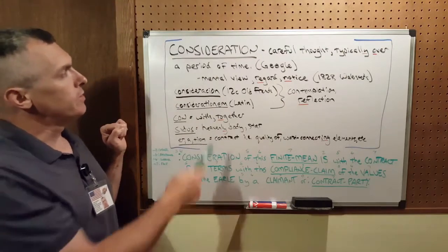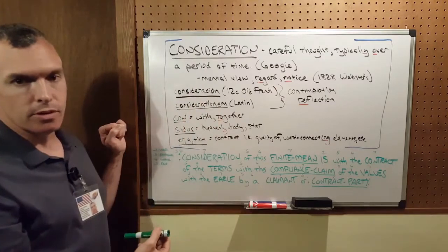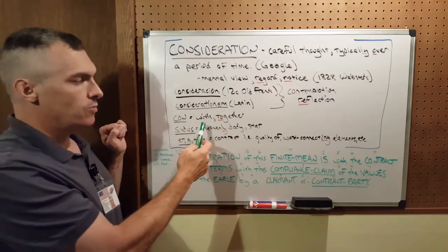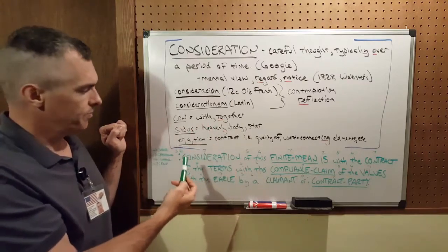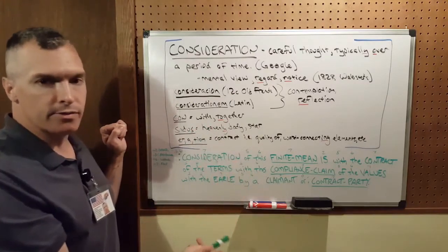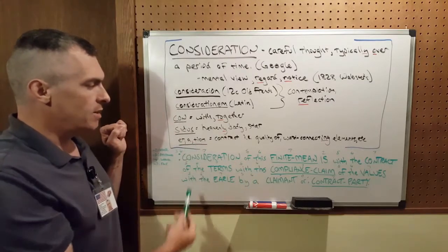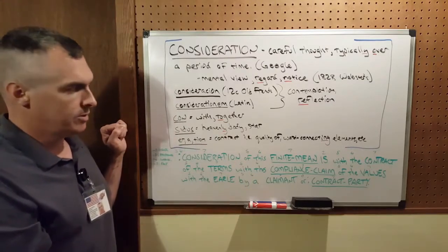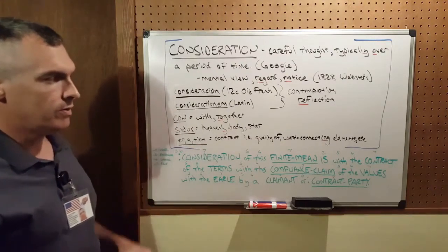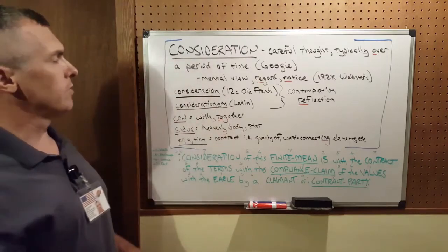Parsing the word further, which means to look at each syllable of the word. Con means with, together. Situs, Latin, means heavenly body or star. E-R-A and T-I-O-N are contract words — they can mean the quality of, word connecting element, etc.